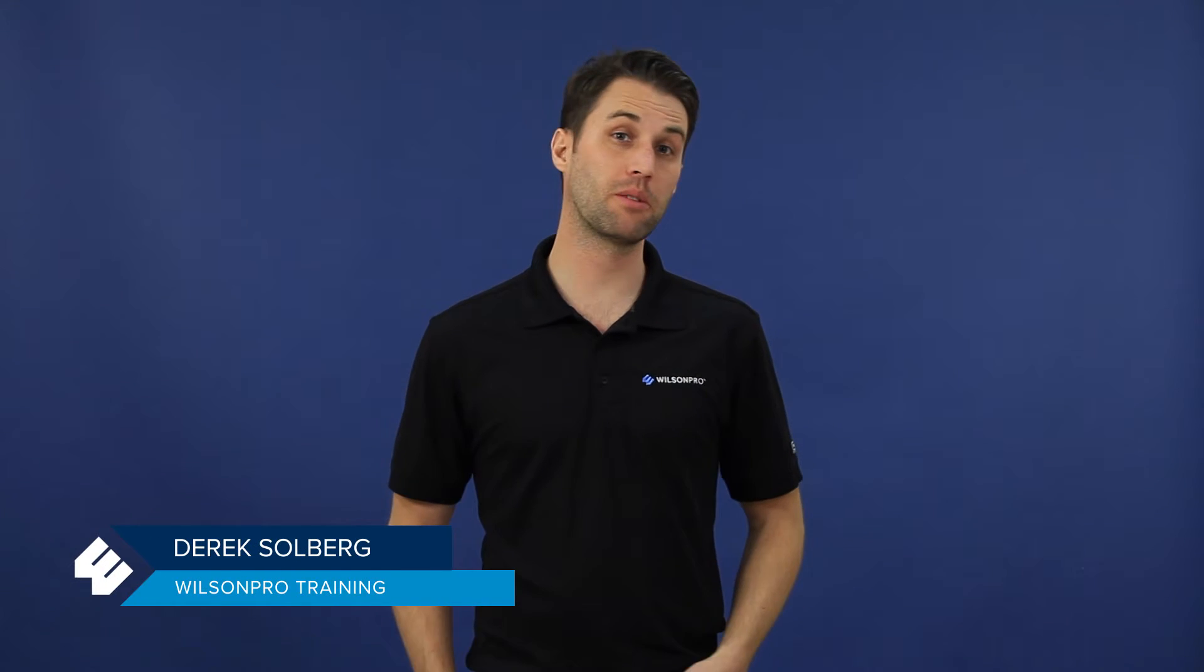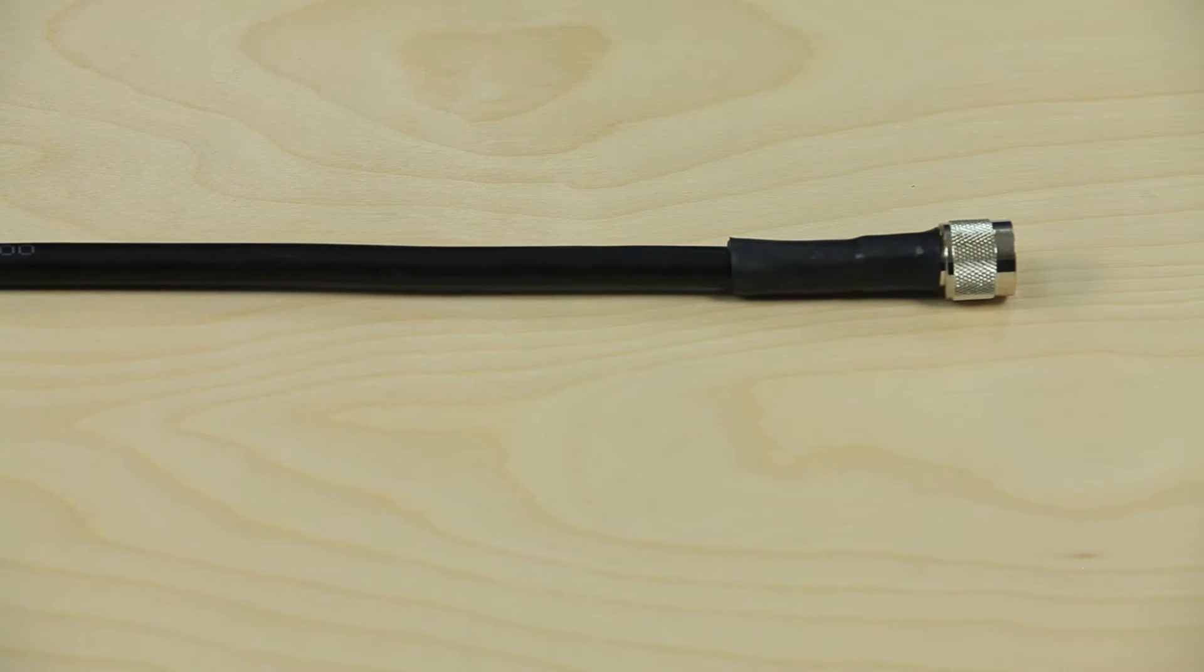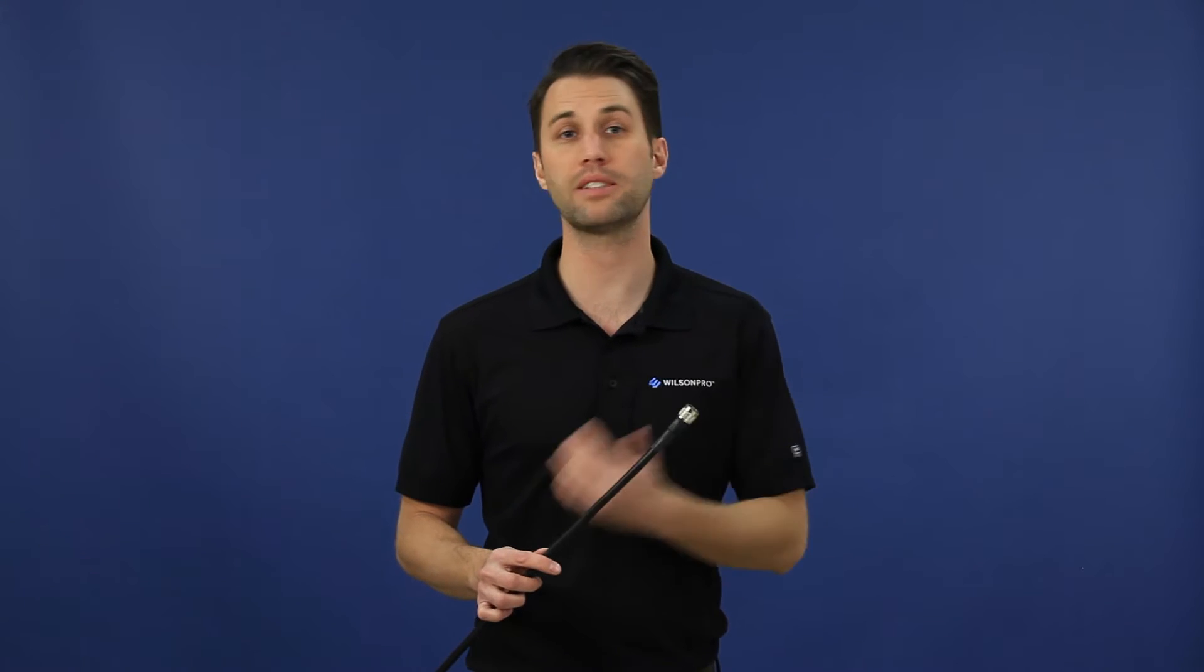Today I'm going to show you how to properly terminate or put the ends on Wilson 400 cable. Doing this correctly will ensure a good connection to all the various components of your signal amplifier system. Improperly terminated cable can result in bad connections which means less signal passing through to the signal booster and ultimately less coverage area inside of the building.